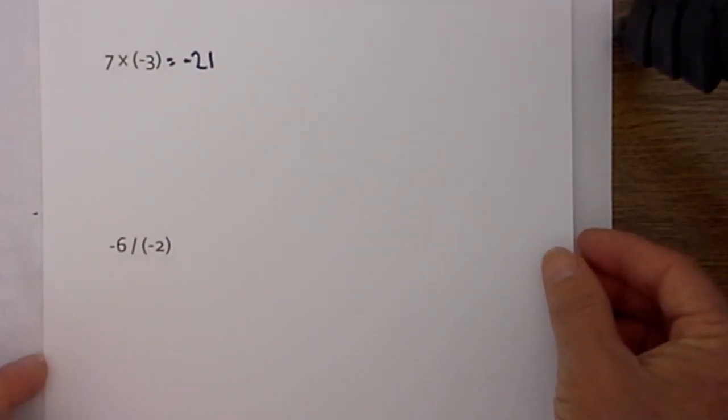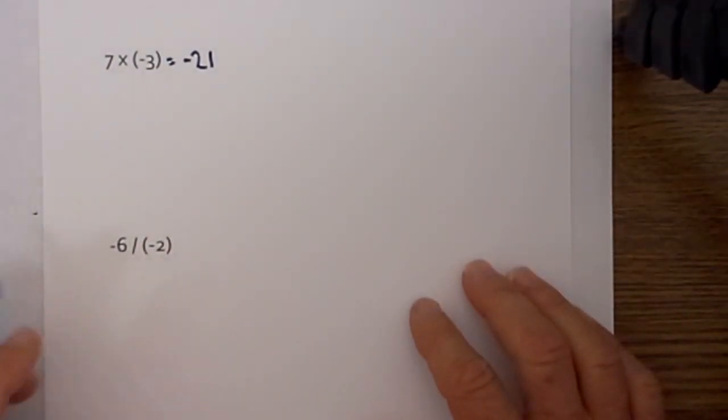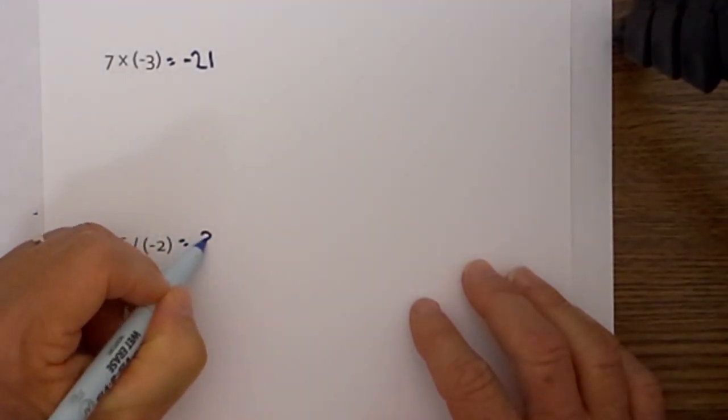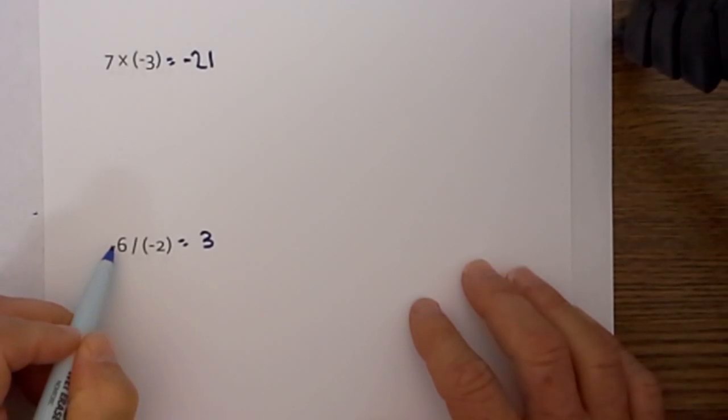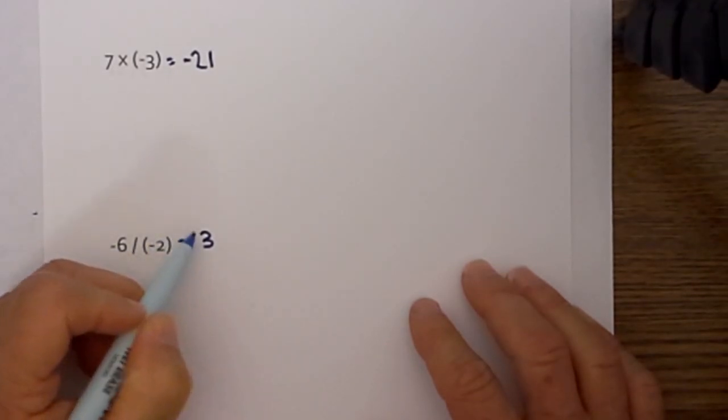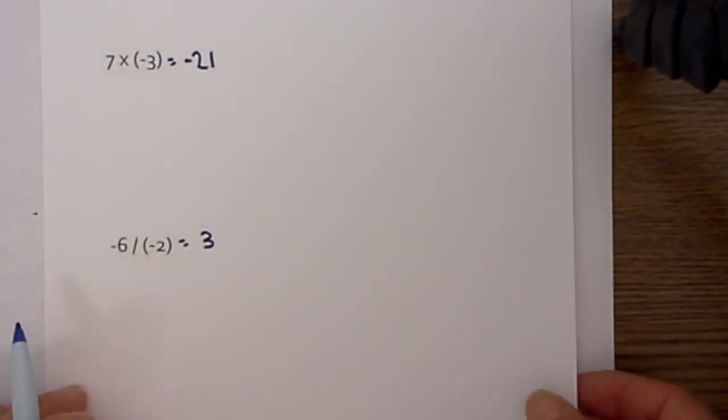Now what about when we divide? You follow the same process. You divide normally, 6 divided by 2 is 3. And since both signs are negative, it will be a positive answer. So the answer will be 3.